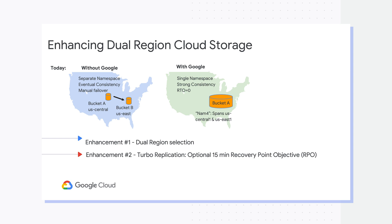The second enhancement is around Turbo Replication. Customers, especially in regulated industries, have tighter RPO requirements. RTO with dual region is always zero. For RPO, for high demanding replication, customers now have the choice to select premium data replication, which gives them a 15-minute SLA-backed RPO guarantee. With Turbo Replication's truly differentiating capability, 100% of your data is replicated within 15 minutes or less. This is globally unique, with a single namespace, custom region selection, and the option to opt in for Turbo Replication — absolutely handy for many enterprise customers.